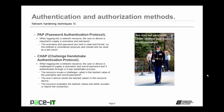More secure than PAP is CHAP, Challenge Handshake Authentication Protocol. When logging into a network resource, the user or device is challenged to supply a username and secret password, and it authenticates through a three-way handshake process. The resource issues a challenge — it wants to know the hashed value of the username and secret password. The user's device sends the hashed value to the resource device. The resource evaluates the hashed value and either accepts or rejects the connection. By using CHAP, the username and password are never sent in clear text. It's much more secure than PAP.